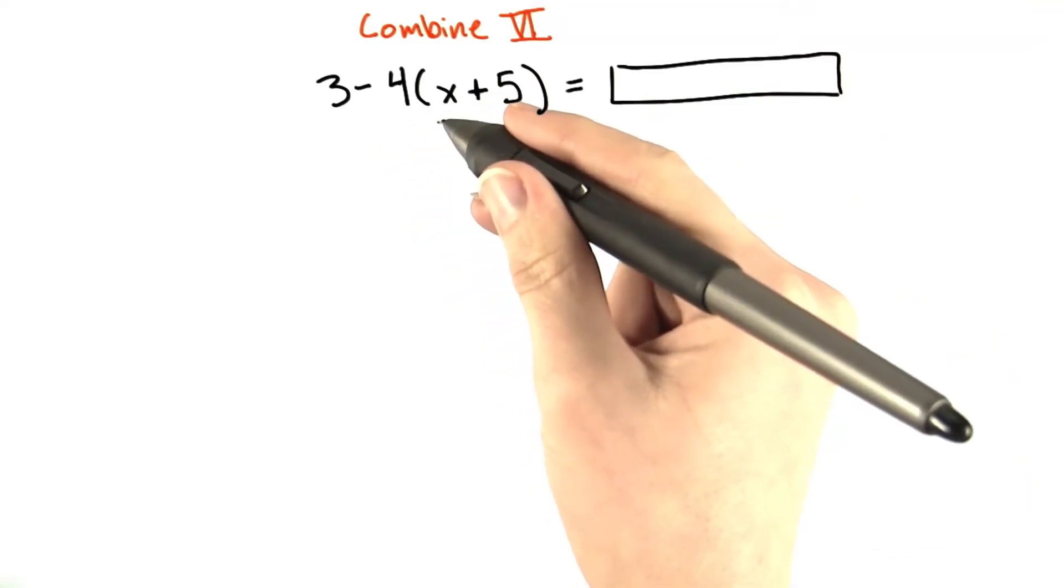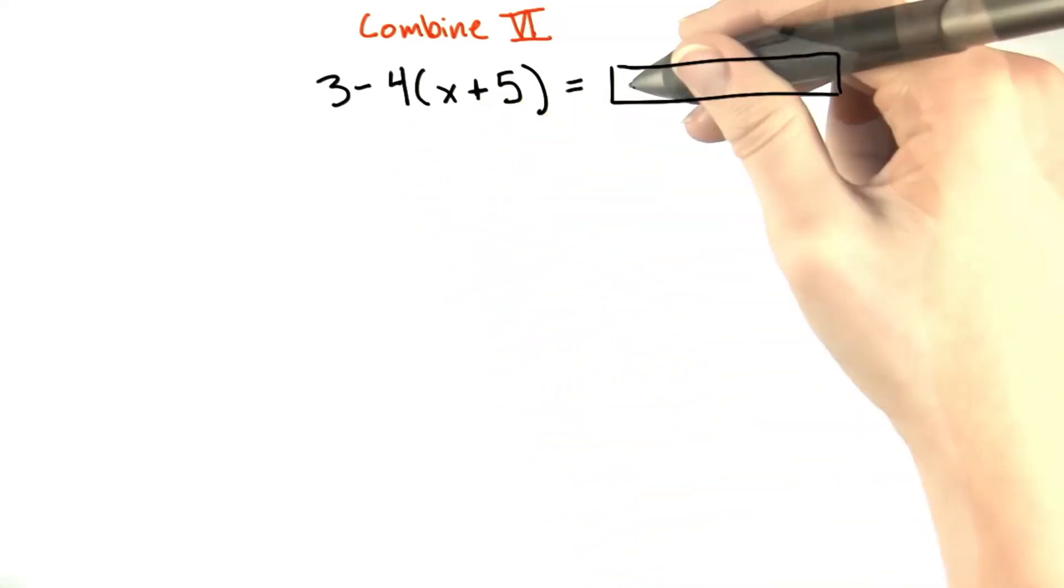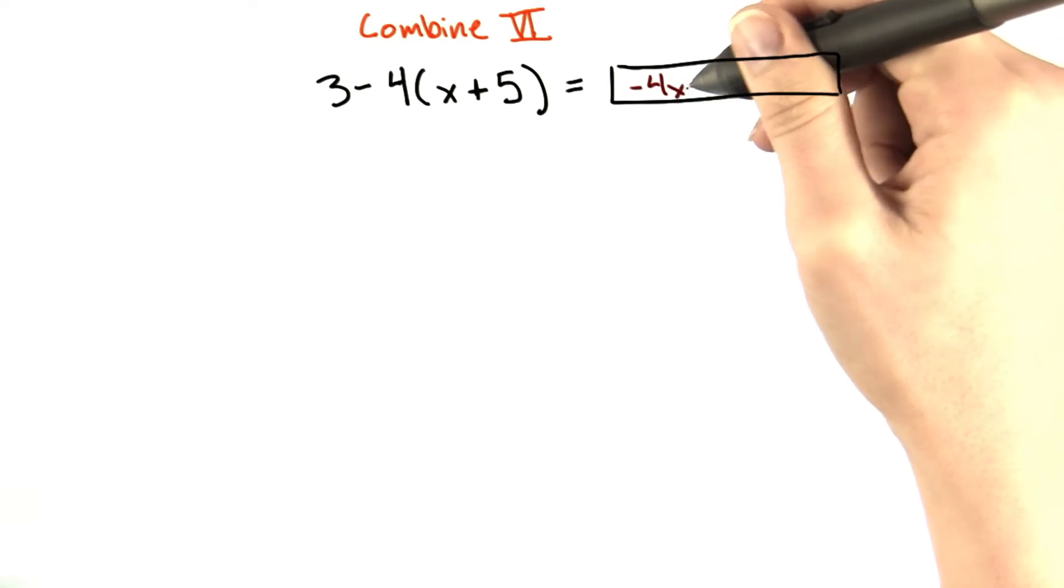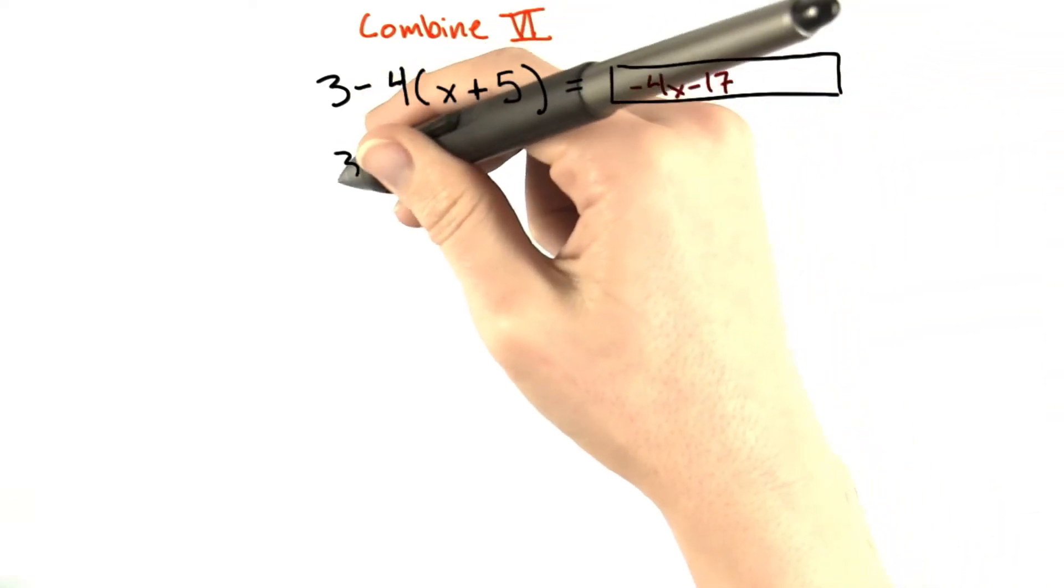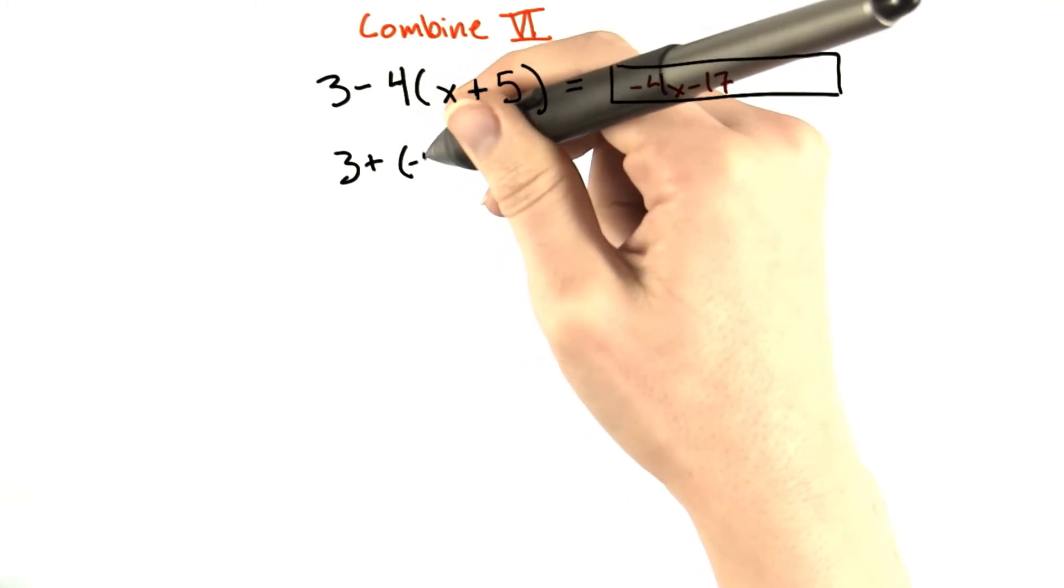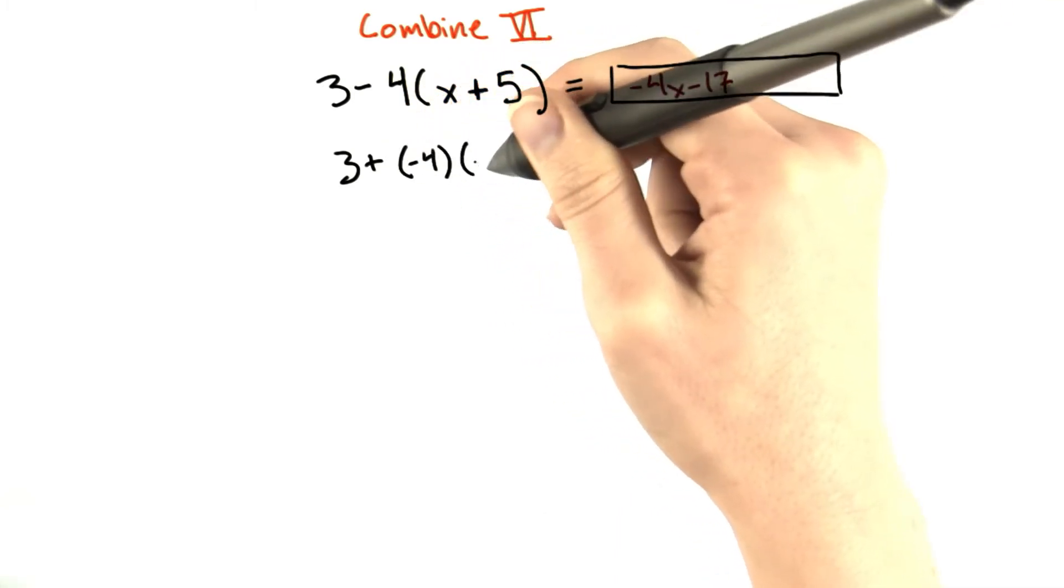3 minus 4 times the quantity of x plus 5 gives negative 4x minus 17. Let's first rewrite this as 3 plus negative 4 times x plus 5.